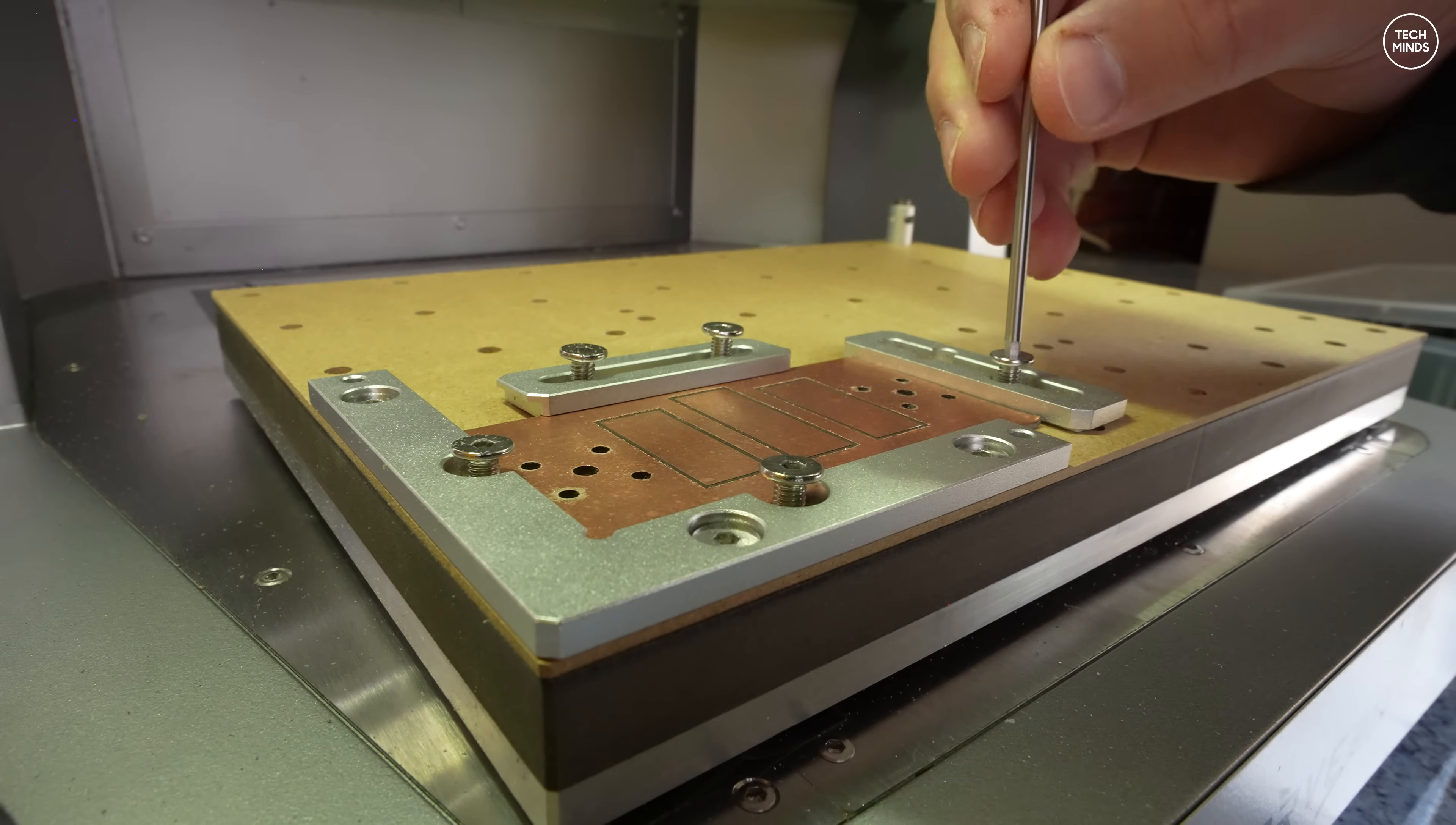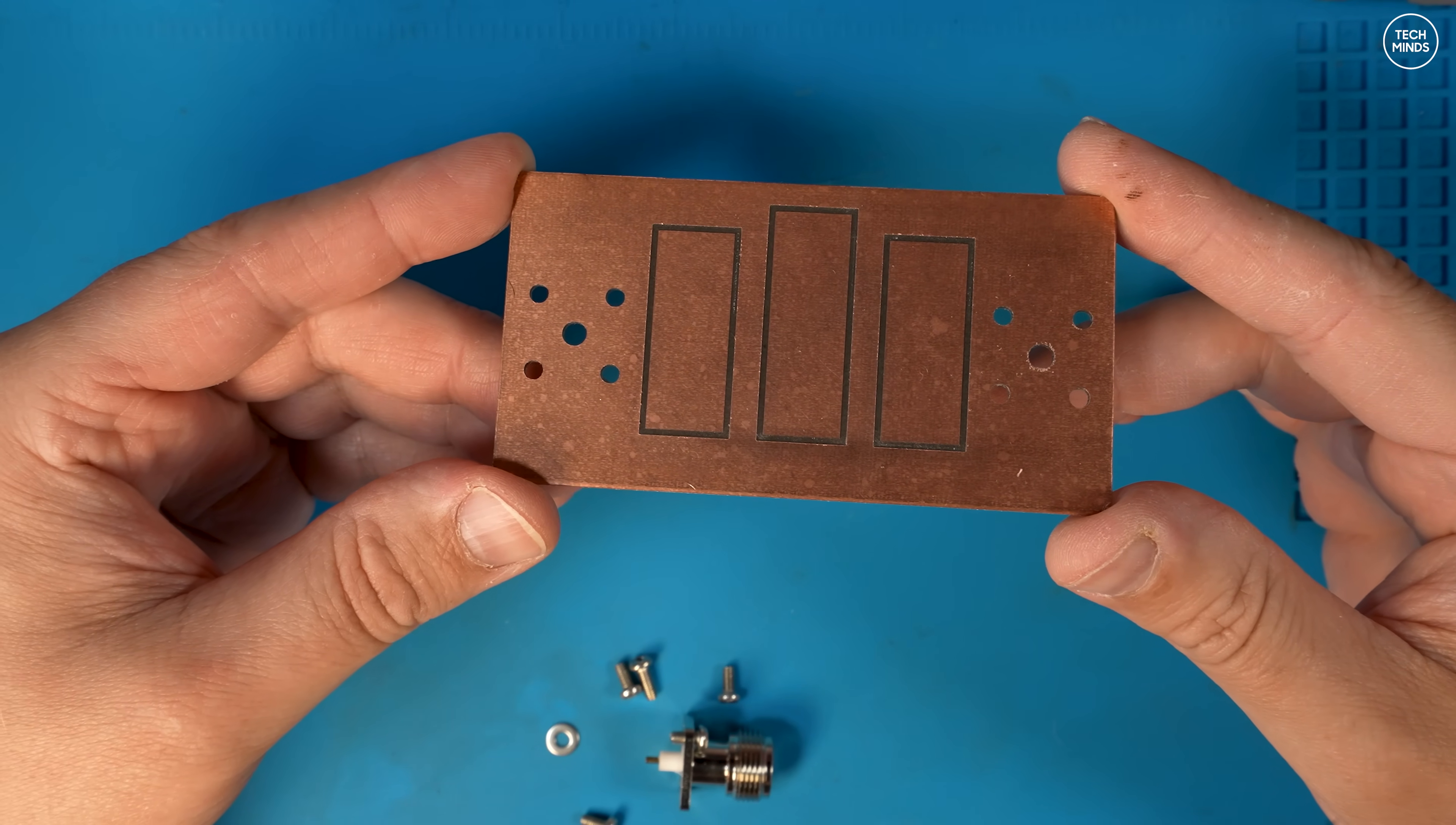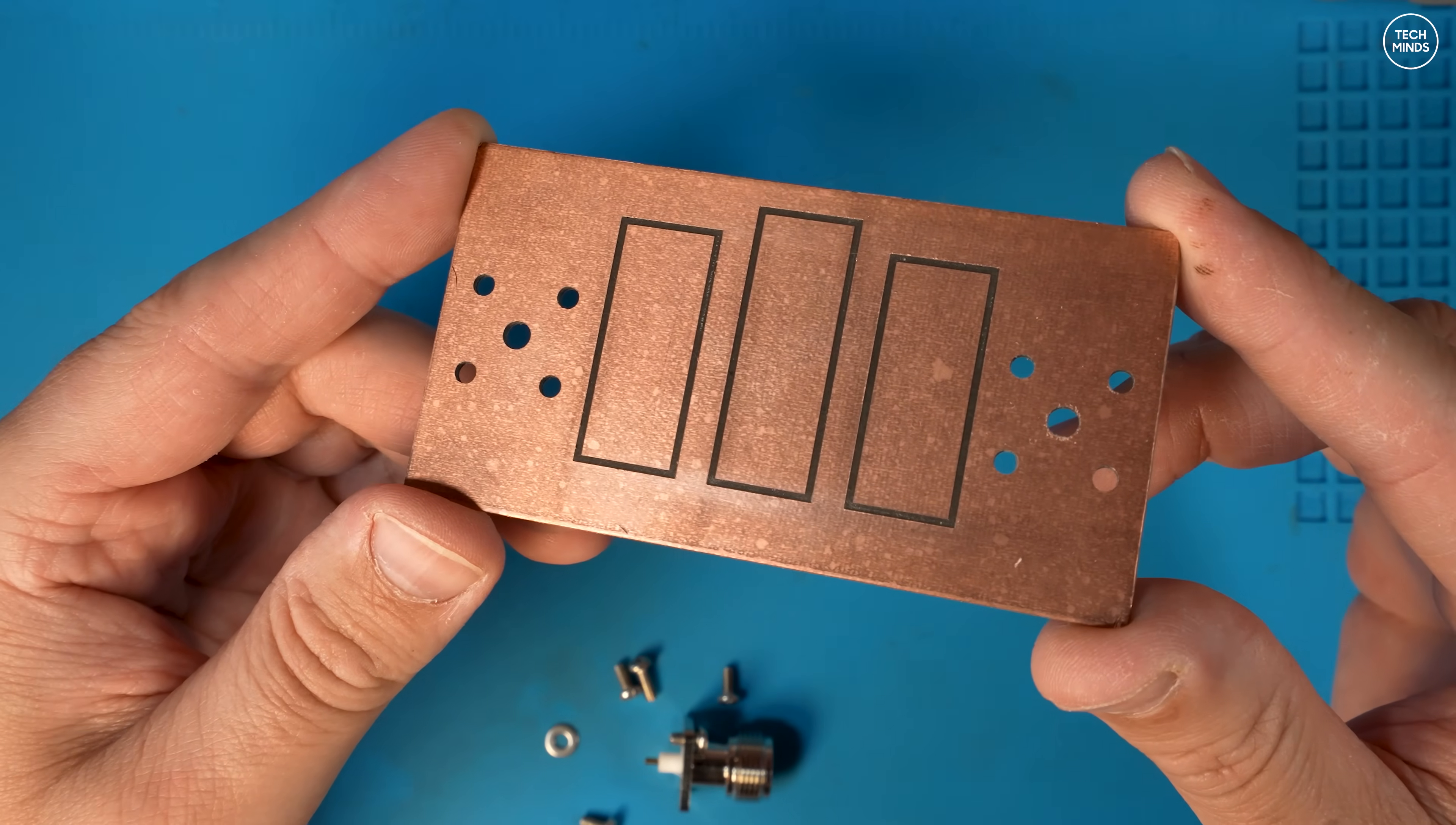With the board now finished, it's time to remove it, and it's as simple as just undoing those supporting clamps that we attached earlier. Back up in the shack now, it's time to inspect the board more closely, and yep, I am extremely happy with this and how it turned out.